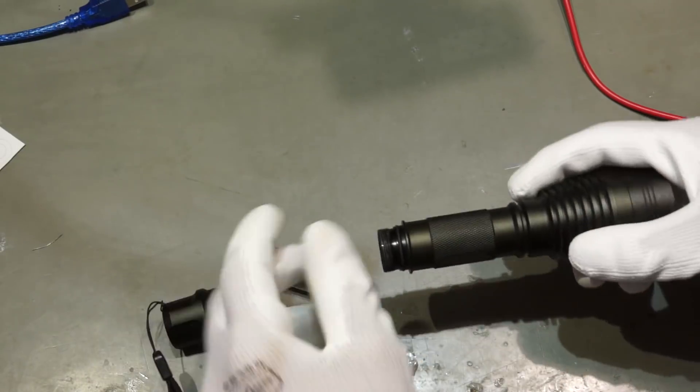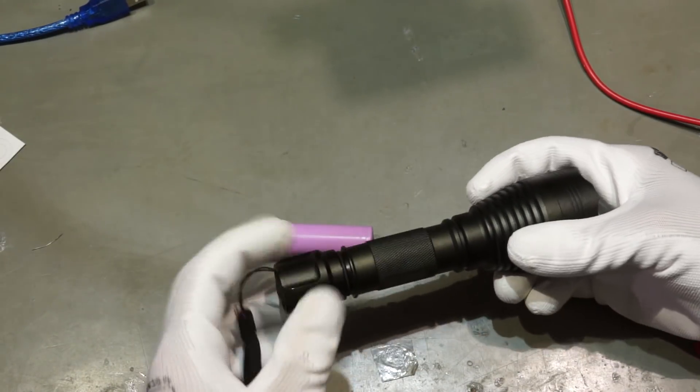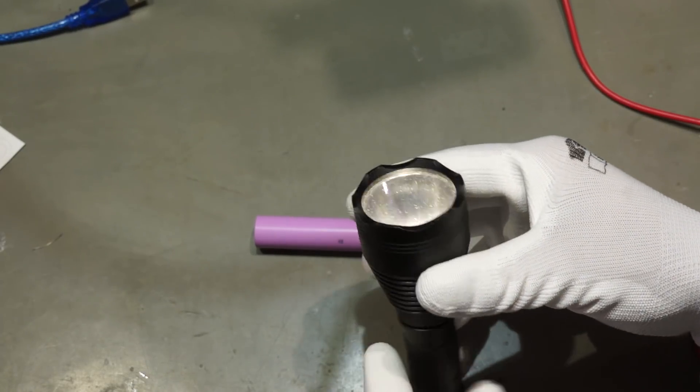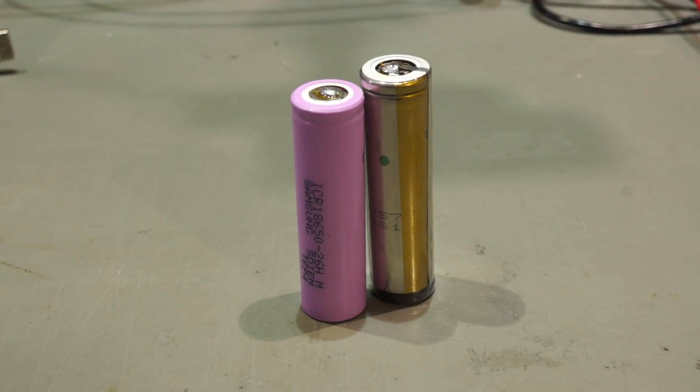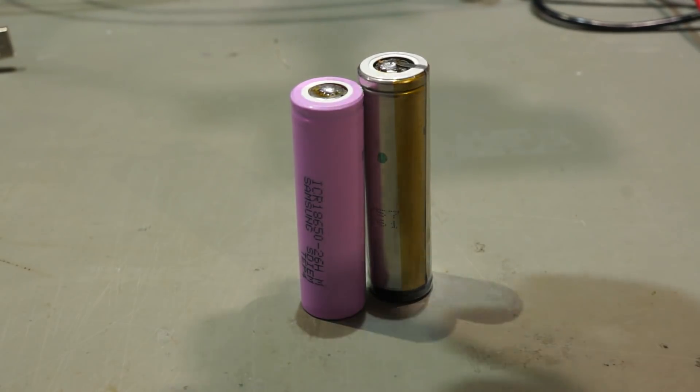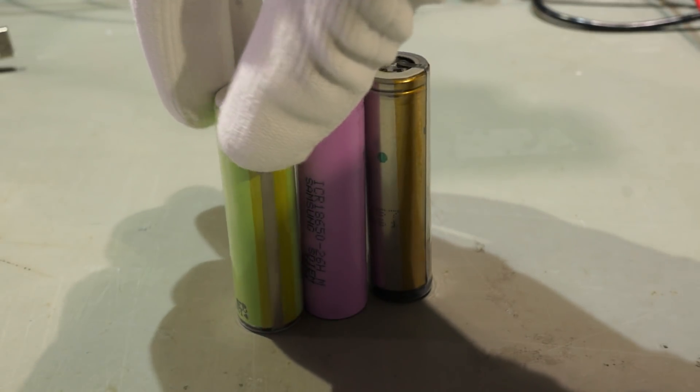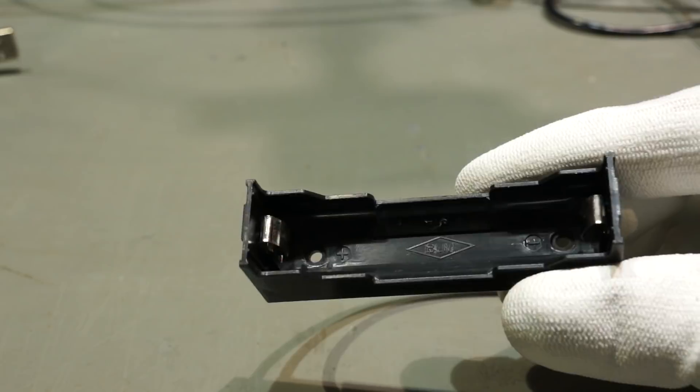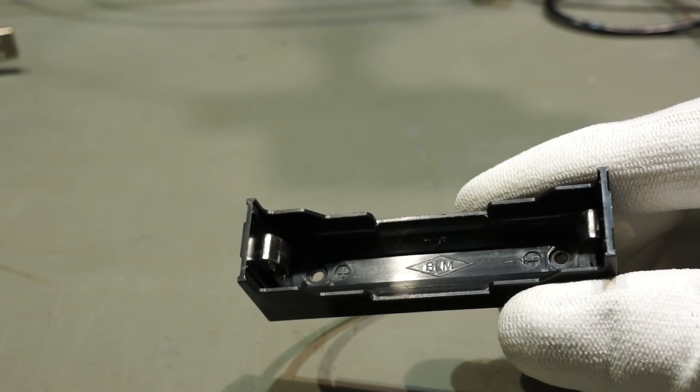Now, I can use this battery in my torch. I just replace an unprotected one with our new one. It is quite obvious, that this protected battery is longer than the unprotected one. To my knowledge, this is also the case, if you buy ready-made protected cells. These batteries do not fit anymore in these battery holders.